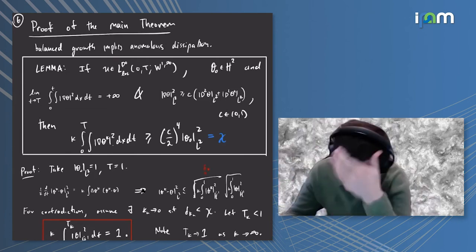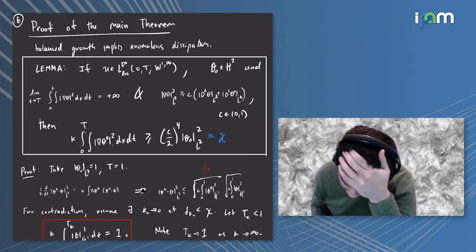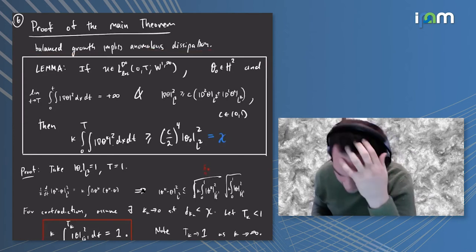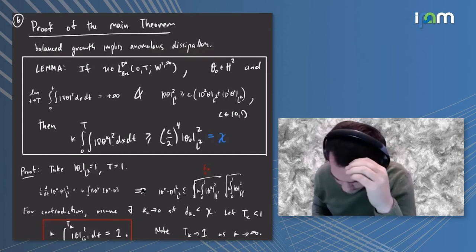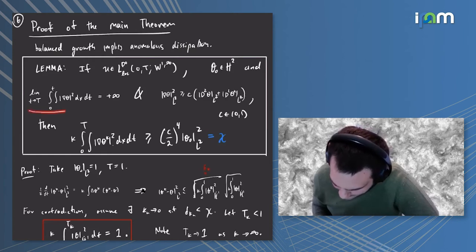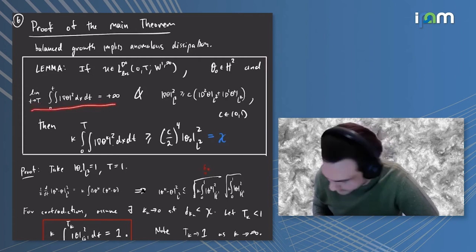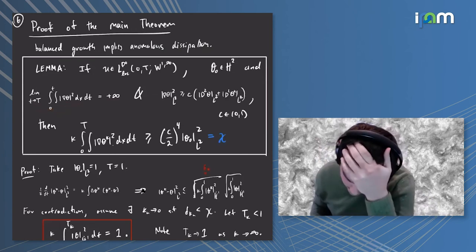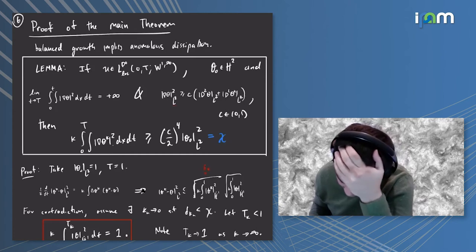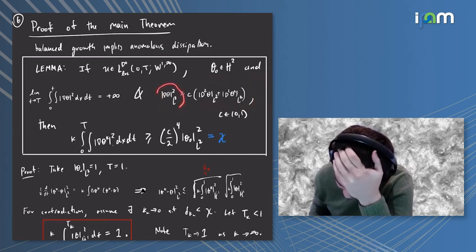Now I want to say a few words about the proof of the main theorem. It relies on a lemma that essentially shows that balanced growth implies anomalous dissipation. Let's work in the setting where the velocity is Lipschitz up to a certain time and the norm could diverge at this time t. Suppose you have a solution of the inviscid problem with the property that the time integral of the H^1 square of the solution actually diverges as you approach time t. Moreover, suppose that the square of the H^1 norm is bounded below by some small constant times the H^2 of both the inviscid and the viscous one.